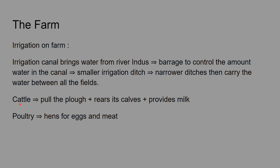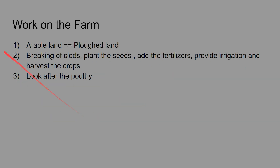Cattle on farmland are used for plowing, and calves are reared to provide milk. Poultry — where hens are kept — gives us eggs and meat. Farm work includes plowing the land, breaking down the plots, planting seeds, adding fertilizers, providing irrigation, harvesting crops, and looking after the poultry.